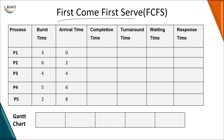Now we will go for the first algorithm, which is First Come First Served (FCFS). In this algorithm, the selection of a process is based only on arrival time. If the arrival time is not mentioned, we take it as zero by default. Based on arrival time and burst time, we prepare a Gantt chart, starting from arrival time zero.